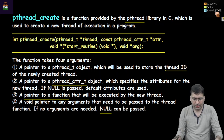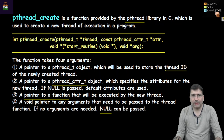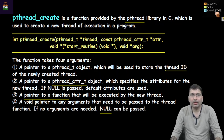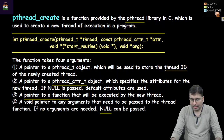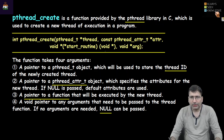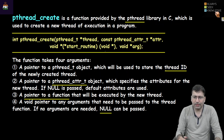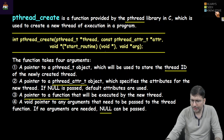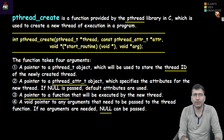Hello everyone. Let's try to understand what is a thread and how we can create multi-threaded processes. For creation of multi-threaded processes in C programming we can use the pthread library. In this session we are going to use the pthread library, and primarily there are two functions: pthread_create and pthread_join.